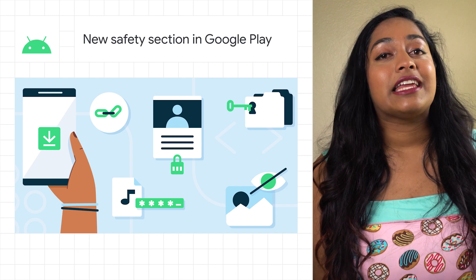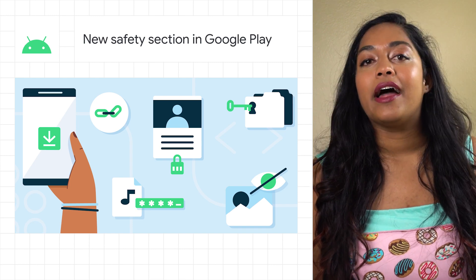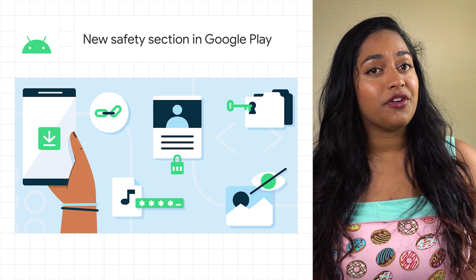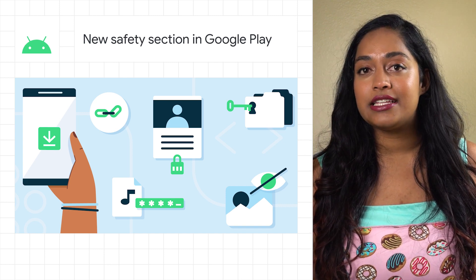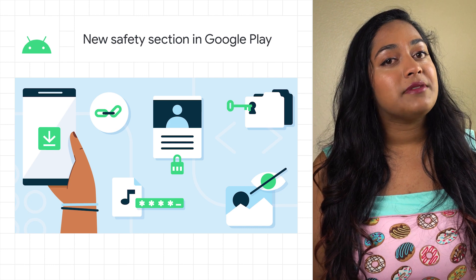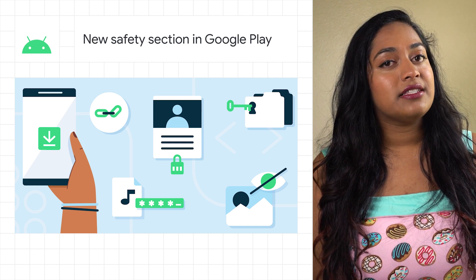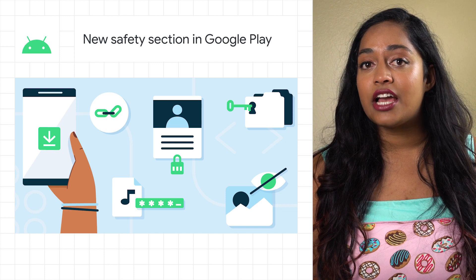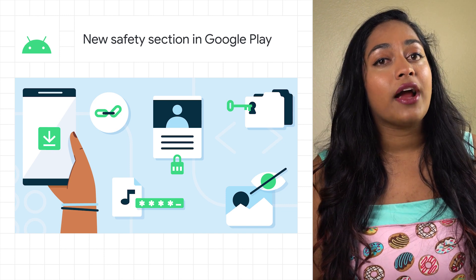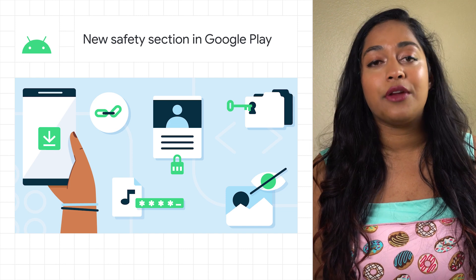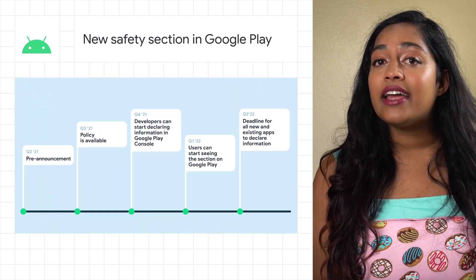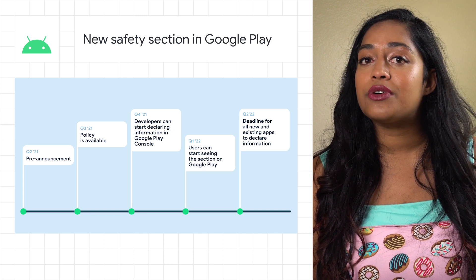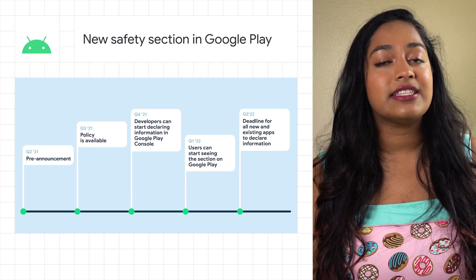We're pre-announcing an upcoming safety section in Google Play that will help people understand the data an app collects or shares, if that data is secured, and additional security details. Similar to app details like screenshots and descriptions, developers are responsible for the information disclosed in their safety section, and all apps on Google Play will be required to share the new policy requirements and resources. You can find our target timeline for the new safety section on the post, along with some resources to help you design secure and privacy-friendly apps.